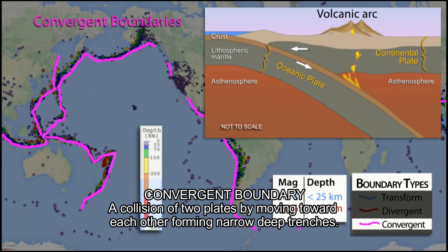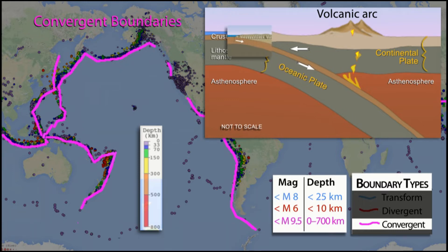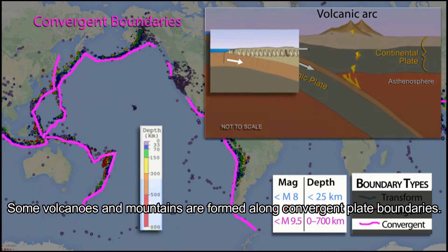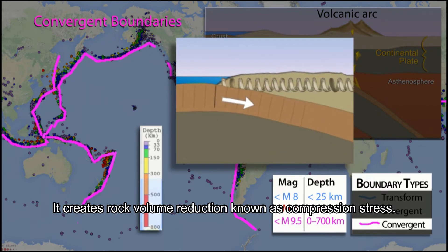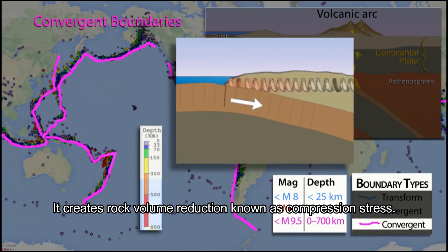Convergent boundary: a collision of two plates moving toward each other, forming narrow deep trenches. Some volcanoes and mountains are formed along convergent plate boundaries. It creates rock volume reduction known as compression stress.